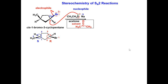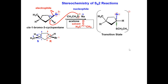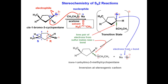The nucleophile must attack from the backside of the carbon-leaving group sigma bond. In the transition state, bonds are forming and breaking: the nucleophile is forming a new sulfur-carbon sigma bond, and at the same time, the carbon-leaving group sigma bond is breaking.